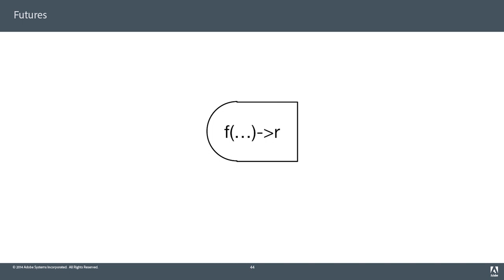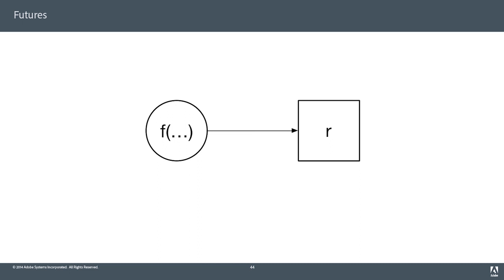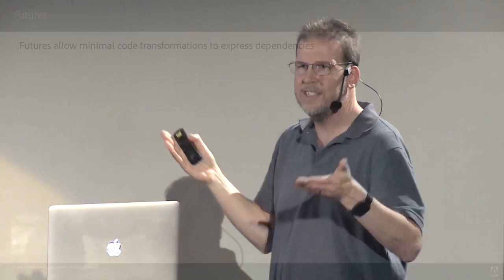Getting back to our talk — what is a future? Conceptually, a future takes a function that returns some result and splits the result from the function. We can say: go execute that function somewhere else, and we have a token for the result that we can retrieve later. We've separated the execution of the function from where the result goes, and those two can now flow independently in the system, connected through shared state.